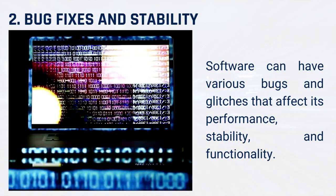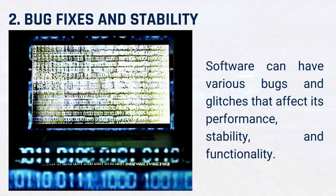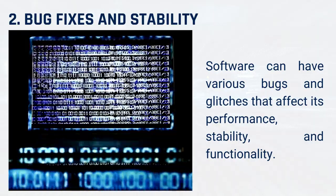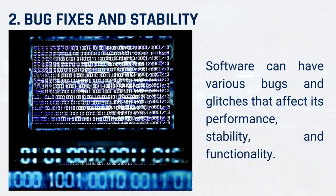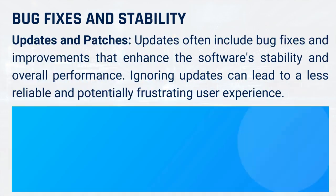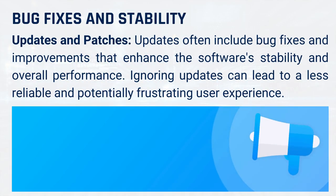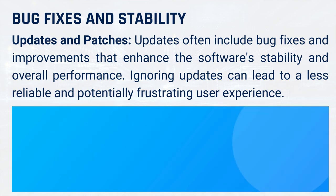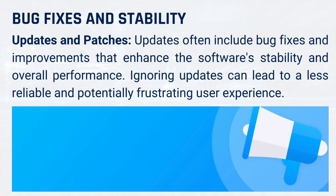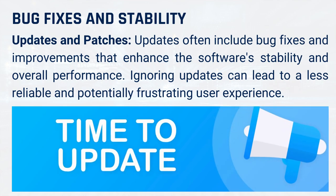2. Bug fixes and stability. Software can have various bugs and glitches that affect its performance, stability, and functionality. Updates often include bug fixes and improvements that enhance the software's stability and overall performance. Ignoring updates can lead to a less reliable and potentially frustrating user experience.